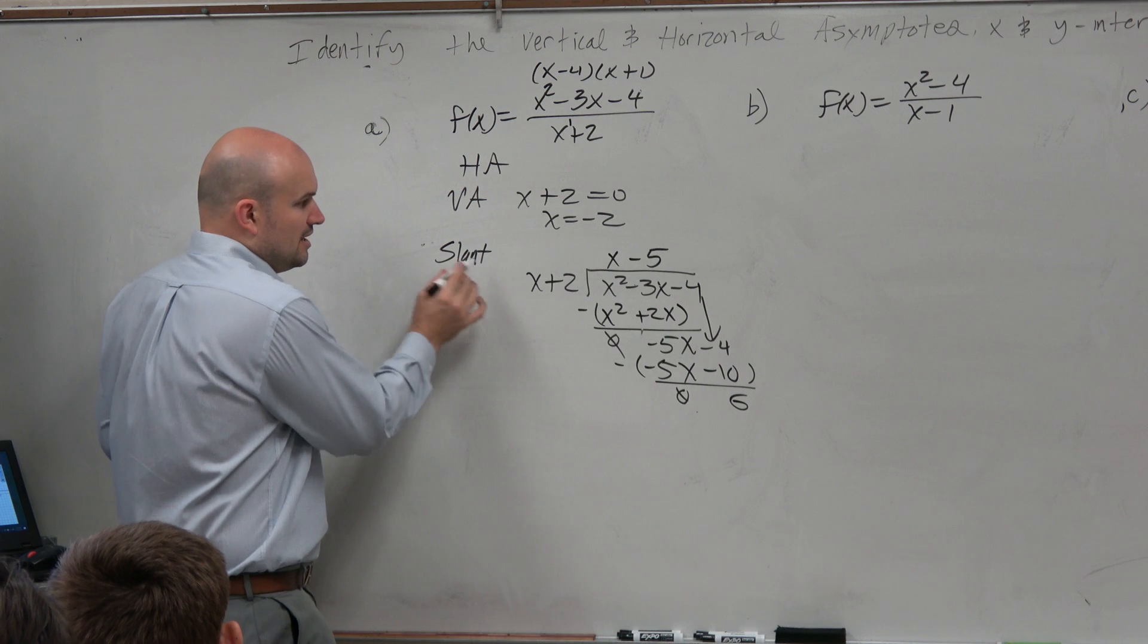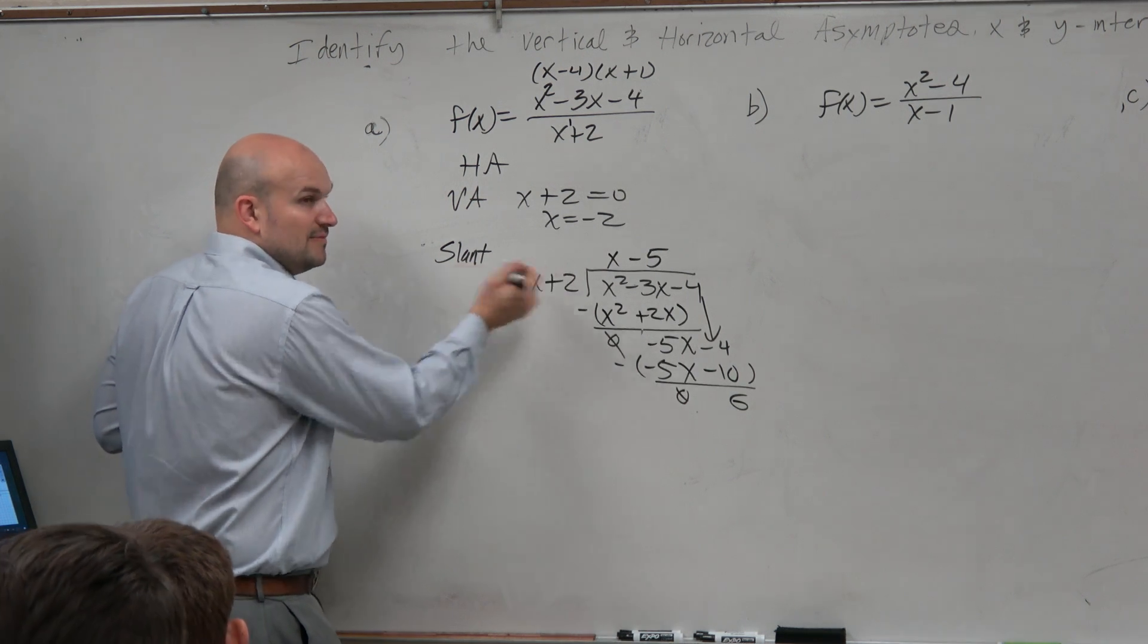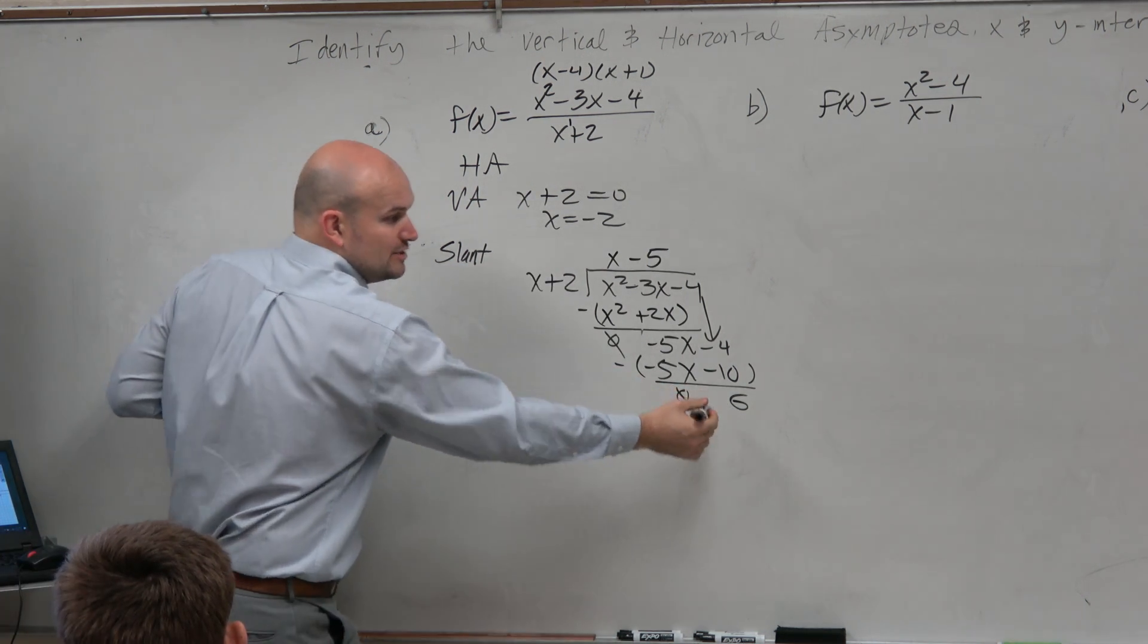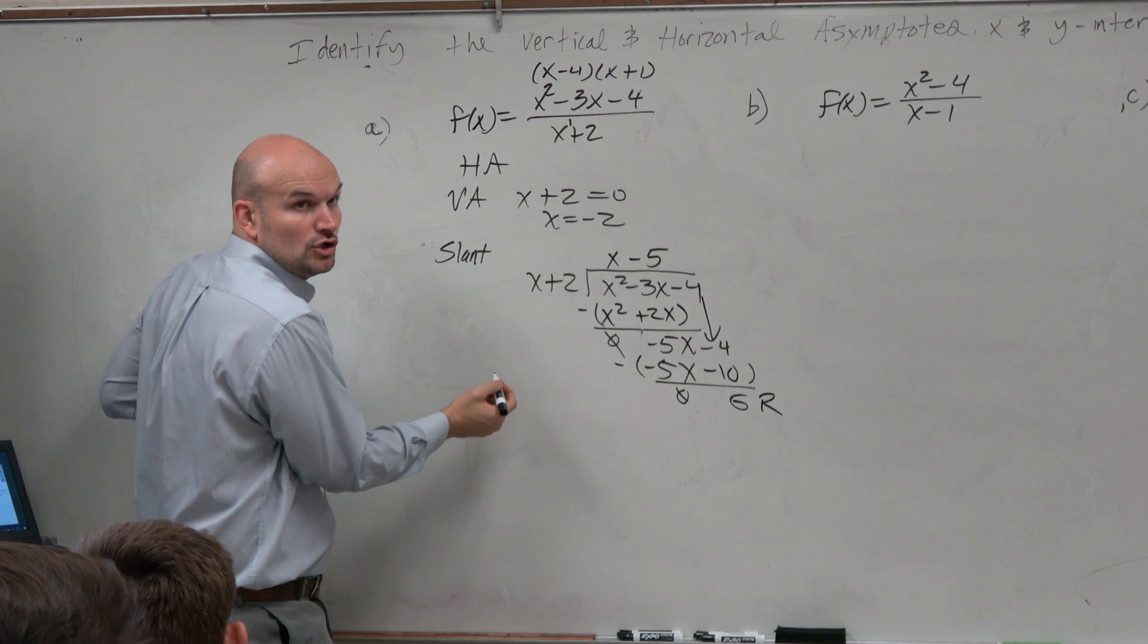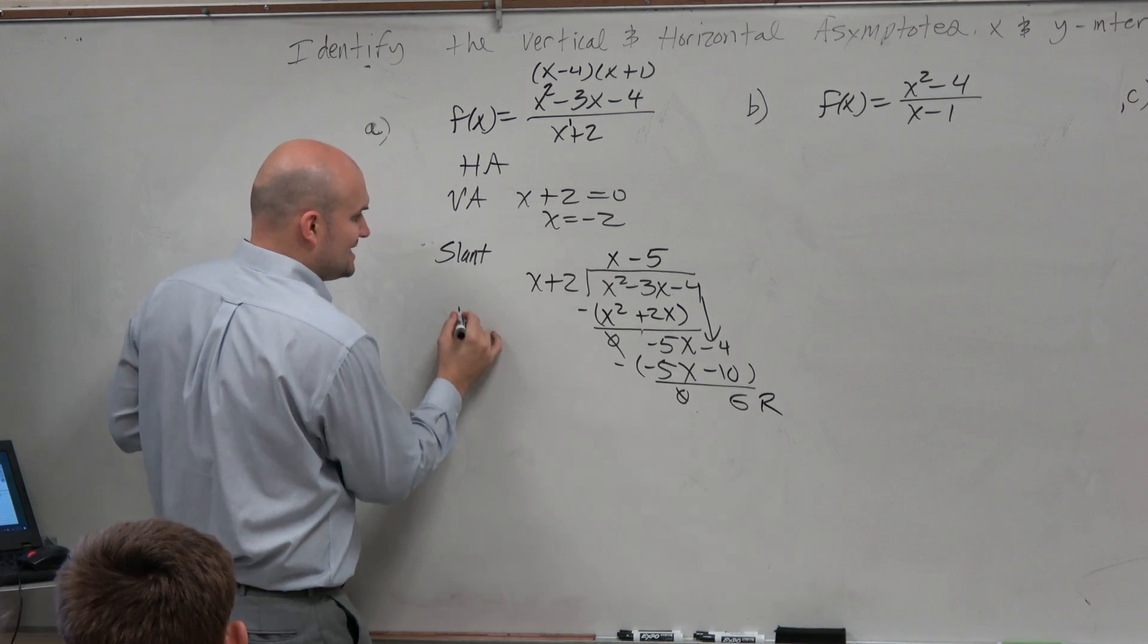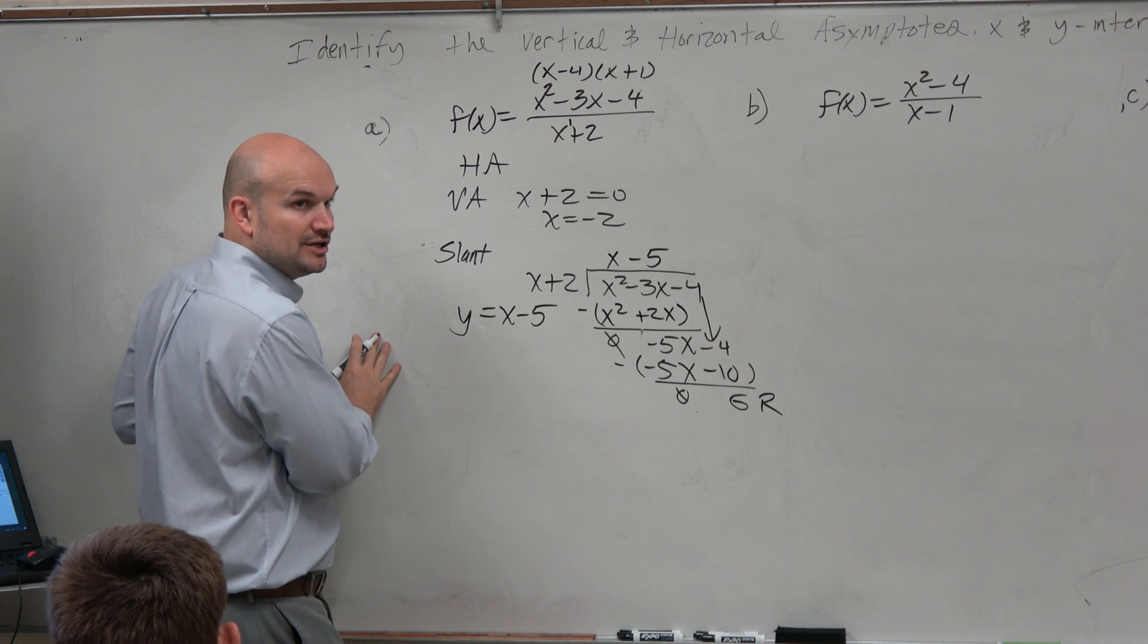But what I want you guys to understand is this quotient, you don't need to worry about the remainder, like what we did earlier in class. The slant asymptote is just the quotient without the remainder.